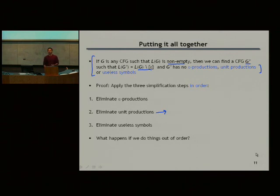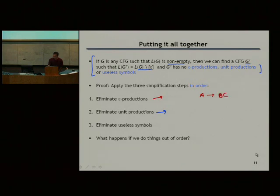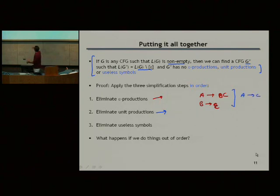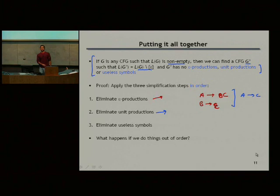When you eliminate epsilon productions, you can come into a case where you have something like S goes to A B, and then B is nullable, so you would change it to just A — and that produces a unit production. So according to the algorithm, A goes to C, and that produces a unit production. So the correct order is: first eliminate epsilon productions (which could create unit productions), then eliminate unit productions (which could create useless symbols), then eliminate the useless symbols.